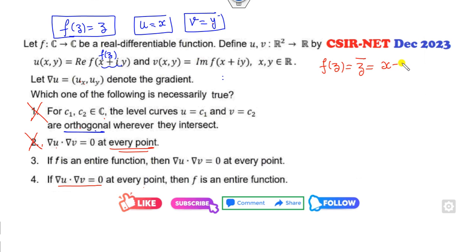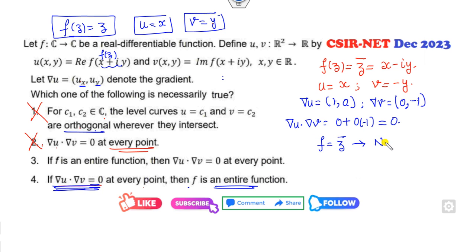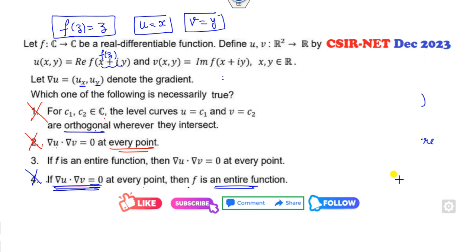I can consider another one. Say here it is my X - iY. Then U will be my X, V is my minus Y. What is the gradient of U? 1, 0, u_x, u_y. What is the gradient of V? v_x, v_y. So what is the dot product of this? 1 into 0 plus 0 into -1, it is 0. So this definition is satisfied, and it is 0 at each point. Is F entire? Clearly say this is mod Z, which is always the non-entire function. Because we all know that derivative is 1, which is non-zero. So therefore it is non-entire function. So this option is cancelled.